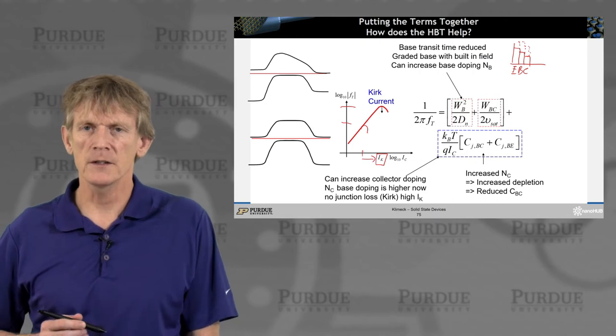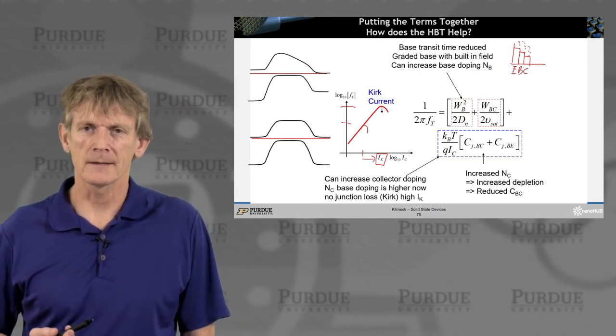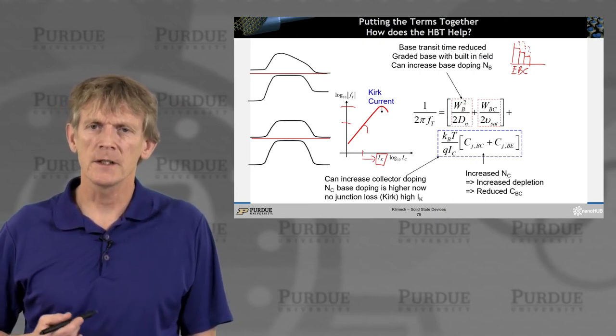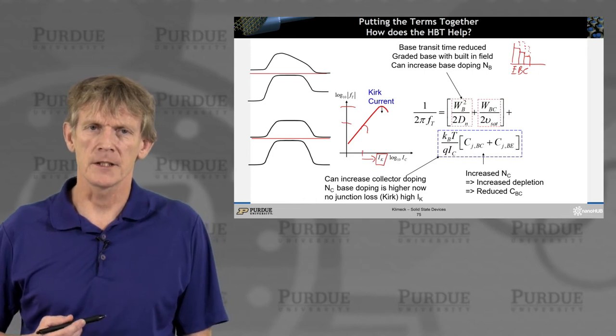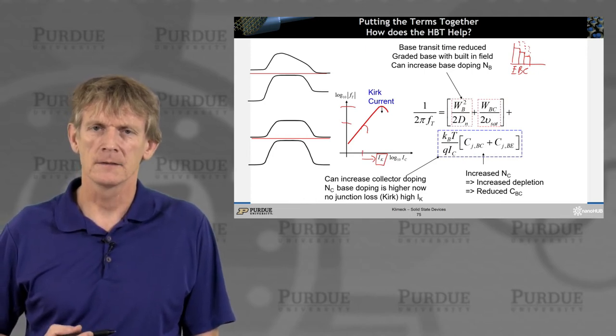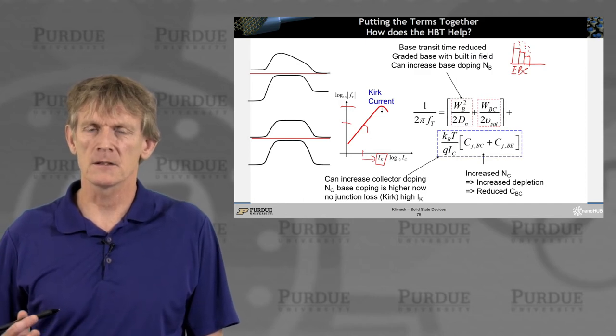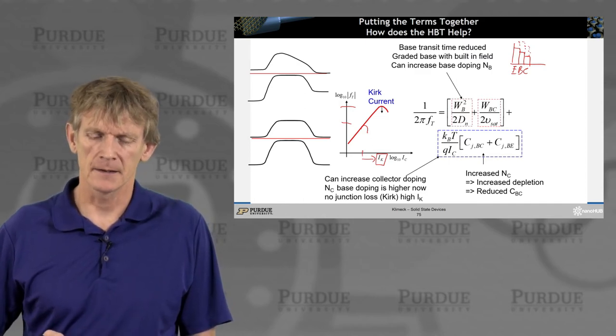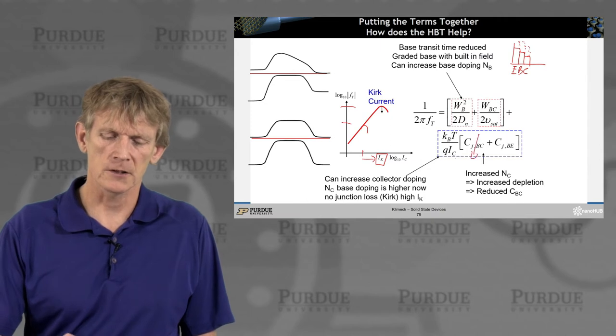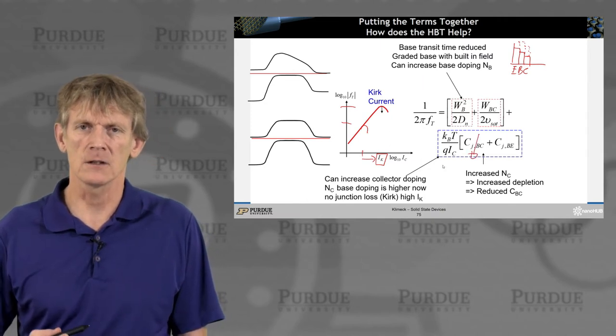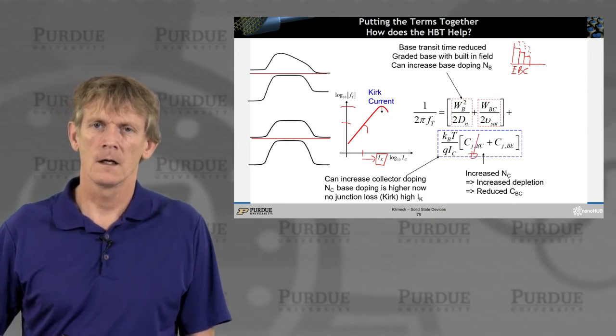Now, if you increase the doping in your collector, you increase the depletion regions in your collector. And that means you separate your depletion region charges further from another. That means you reduce your junction capacitances. So that's an additional bonus.